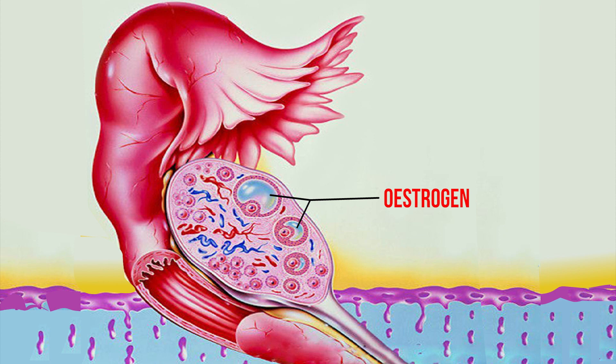What are estrogens? These are steroidal hormones secreted by the theca interna of the cells of the Graafian follicle, corpus luteum, and placenta.